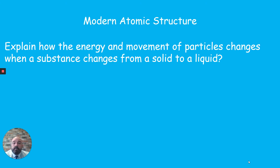This presentation is all about modern atomic structure. In previous presentations, we looked at how protons, neutrons, and electrons make up the atom, and how we've moved from Dalton's idea of spheres through to the Plum Pudding model and alpha scattering. Today we'll look at mass numbers, atomic numbers, and electron structures.